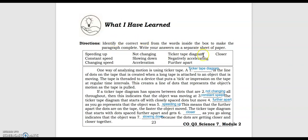For the 'What I Have Learned' portion: one way of analyzing motion is using ticker tape. A ticker tape diagram is the line of dots on the tape created when a long tape is attached to a moving object. The tape is threaded to a device that puts a ticker impression at regular time intervals, creating a line of dots representing the object's motion. If the spaces between dots are not changing throughout, the object is moving at constant speed. If the tape starts with closely spaced dots that move farther apart, the object was speeding up — the farther apart the dots, the faster the object moved.